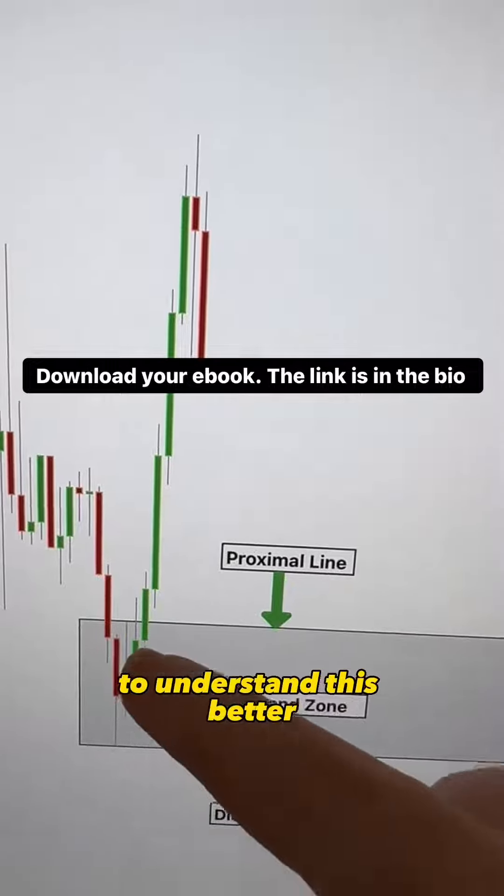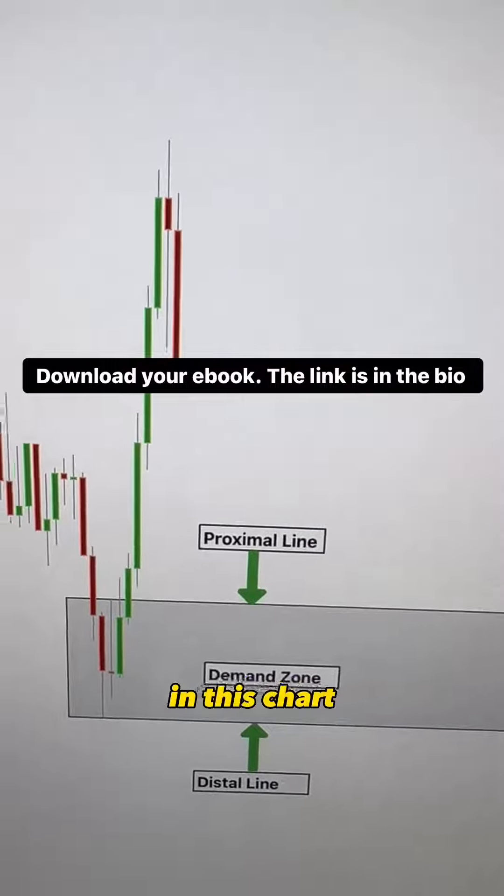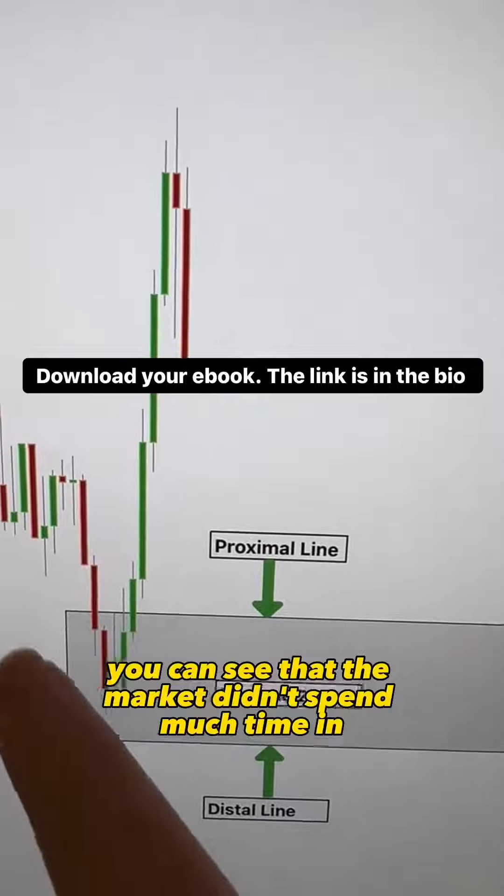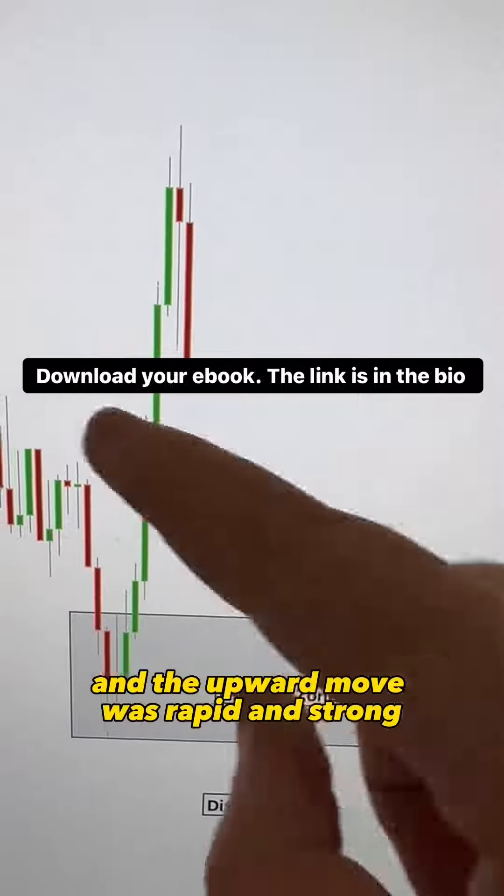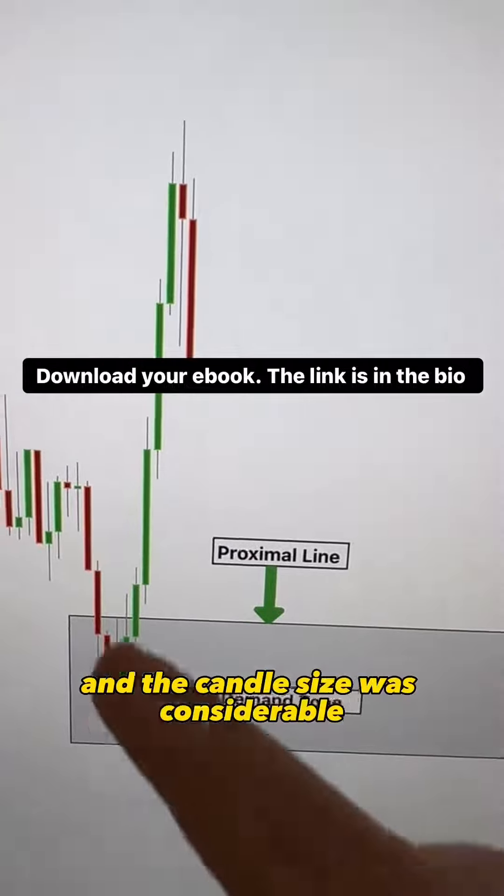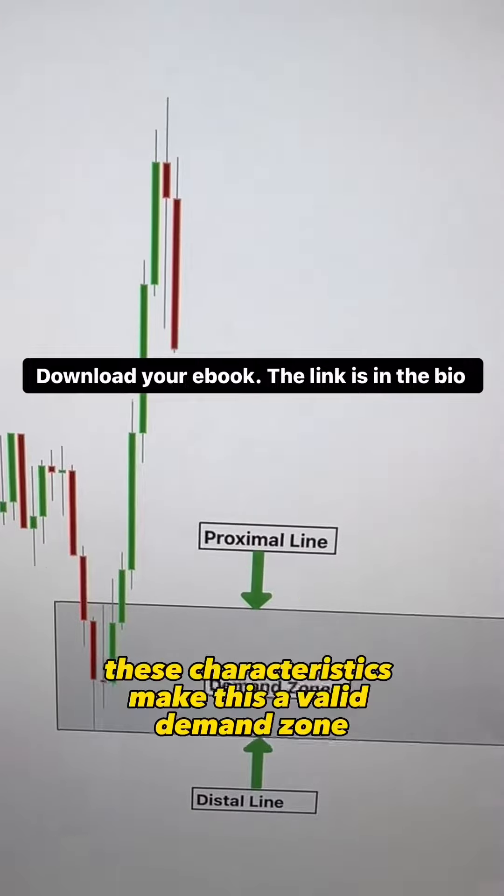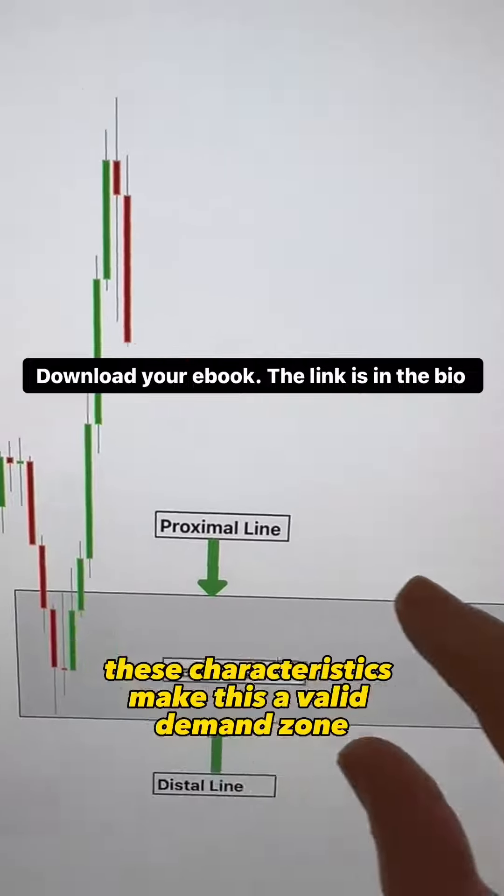Let's take a look at a trade example to understand this better. In this chart, you can see that the market didn't spend much time in the demand zone, and the upward move was rapid and strong, and the candle size was considerable. These characteristics make this a valid demand zone for trading.